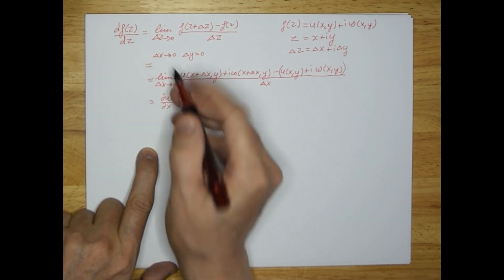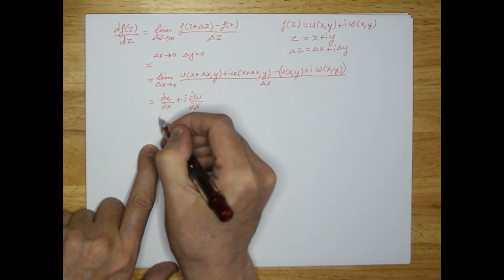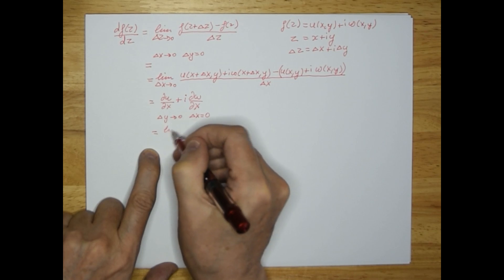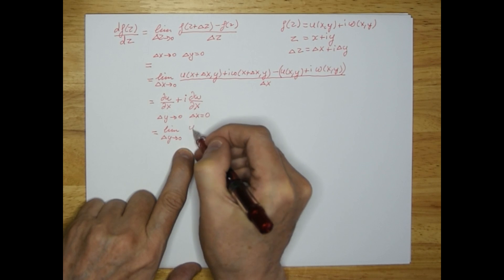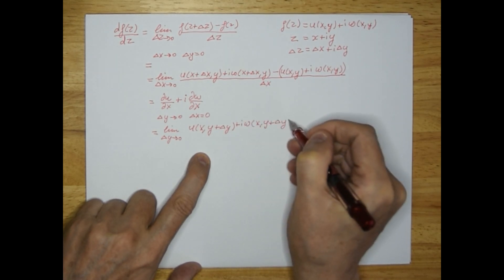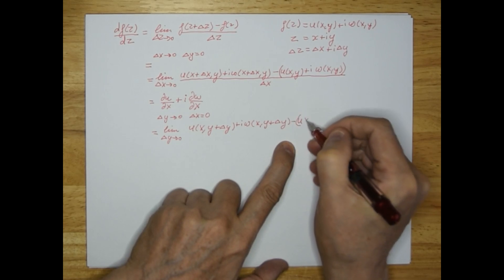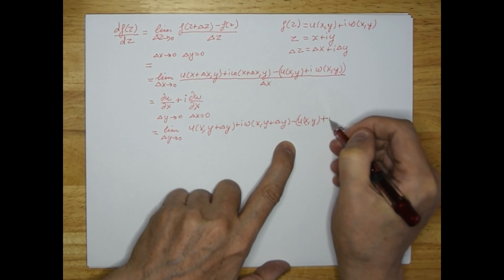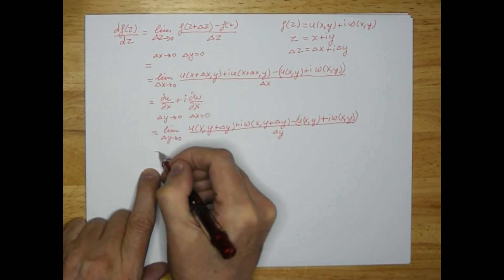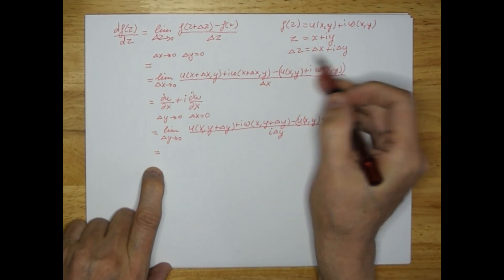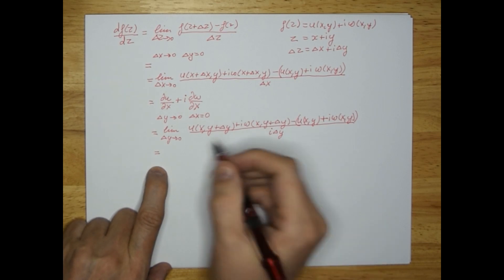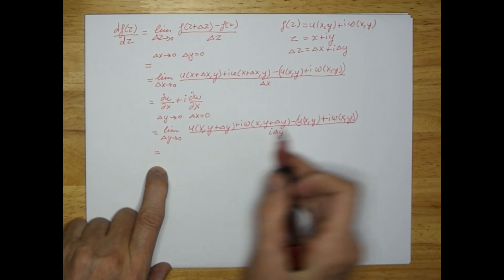You can obviously do something similar for the y direction: now delta y goes to zero and delta x equals zero. The result is the limit as delta y goes to zero of u(x, y + delta y) plus i·w(x, y + delta y), minus u(x, y) plus i·w(x, y), divided by delta z. Since delta z equals delta x plus i·delta y, when delta x is zero you still need to divide by i·delta y.